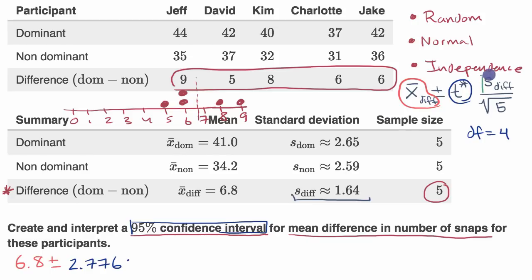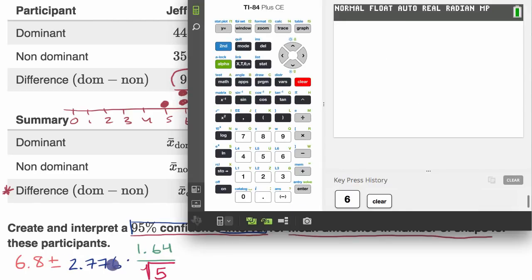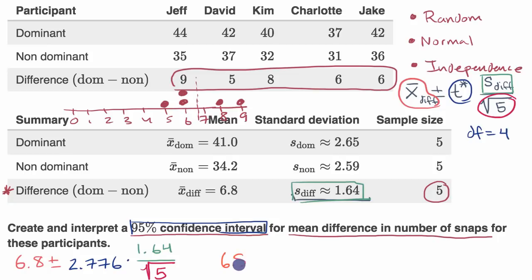So we have 2.776 as our critical value. And then times our sample standard deviation. Well, the sample standard deviation for our differences right over here is 1.64. And then we're going to divide that by the square root of our sample size. So the square root of our sample size. Well, I already wrote a five in there. Sometimes I just write an n there. Okay. And so what is this going to be equal to? First, let's calculate just the margin of error right over here. So this is going to be 2.776 times 1.64 divided by the square root of five. And we get a margin of error of approximately 2.036. So this is going to be 6.8 plus or minus 2.036.